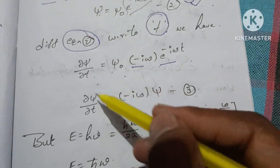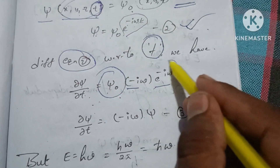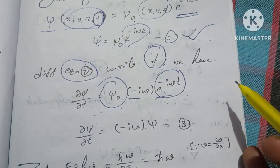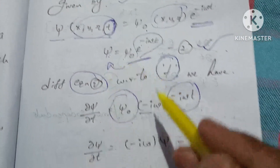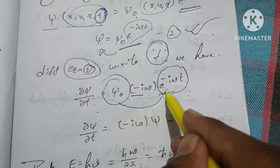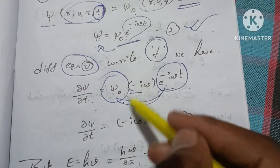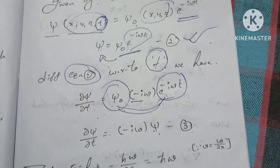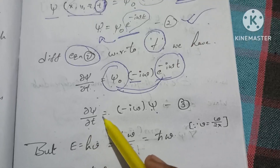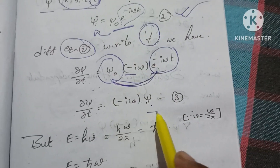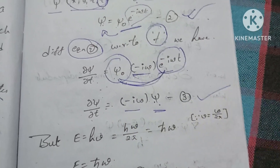So ∂ψ/∂t = ψ₀ · e^(−iωt) · (−iω). Since ψ₀ · e^(−iωt) = ψ, this gives ∂ψ/∂t = −iω · ψ. This is equation 3.